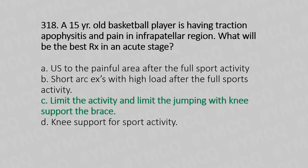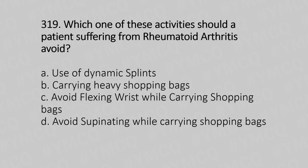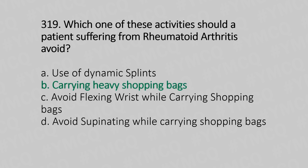Question 319: Which activity should a patient suffering from rheumatoid arthritis avoid? Option A: use of dynamic splints. Option B: carrying heavy shopping bags. Option C: avoid flexing wrists while carrying shopping bags. Option D: avoid supinating while carrying shopping bags. The answer is Option B, carrying heavy shopping bags.